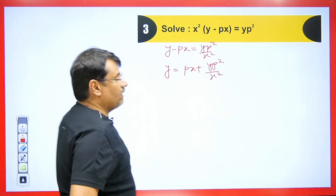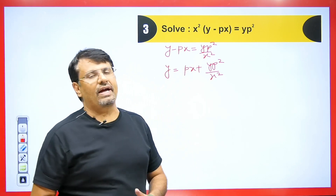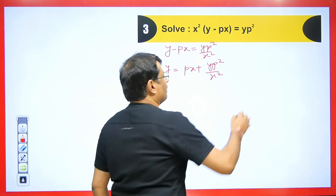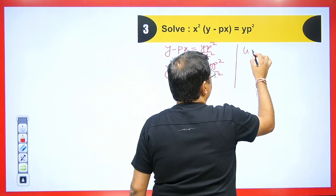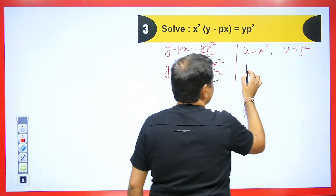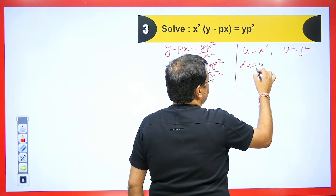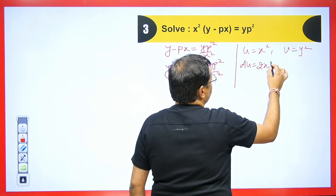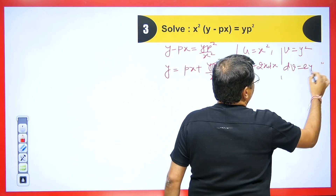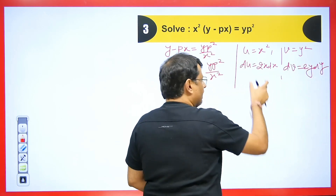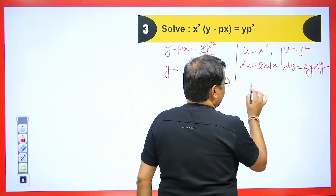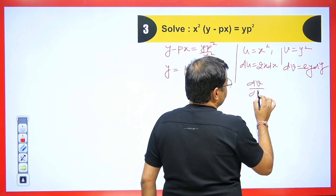We will take u = x² and v = y². Differentiating: du = 2x dx and dv = 2y dy. Dividing these two: dv/du = (2y dy)/(2x dx). We define capital P = dv/du, and since dy/dx is small p, this gives capital P = (y/x)·p.